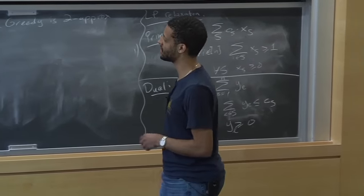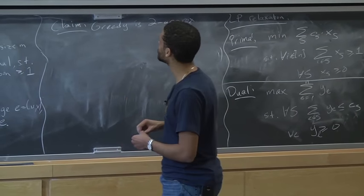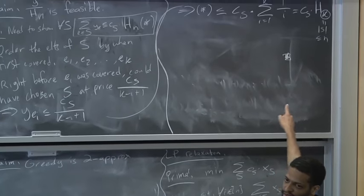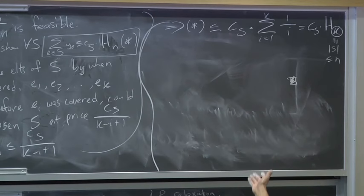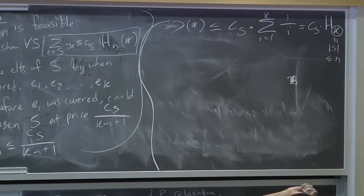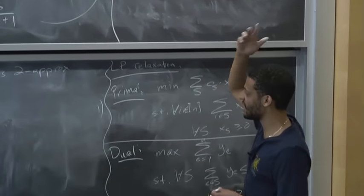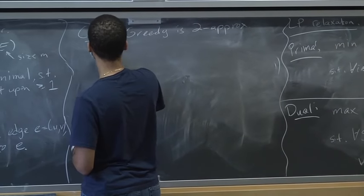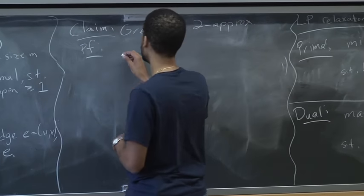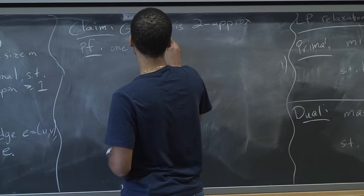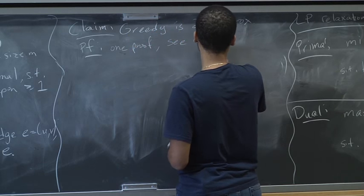Edges are contained in two sets. For set cover, if every set has size at most k, you get an Hk approximation. But you could look at it the other way: what if every element is contained in at most k sets? For that, you could get a k approximation. That's going to be related to what I'll write now. One proof — see the CS124 notes. But I'll show a different proof today using primal dual, which will be helpful for the pset.